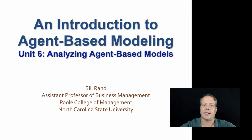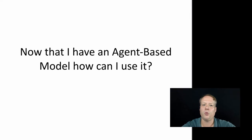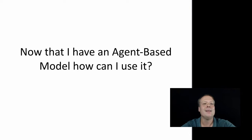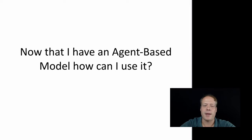Hello, and welcome to Unit 6 of an introduction to agent-based modeling. In this unit, we're going to be discussing how to analyze agent-based models. This, of course, brings up the age-old question: now that you have an agent-based model, what are you going to do with it? The standard answer is that you're going to modify some of the inputs and outputs to the model, look at what the outputs generate, and from that, analyze the results. That's the main answer we go through, and all of this unit is essentially going to be about doing that.